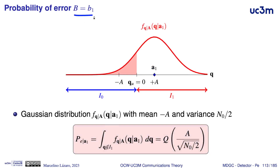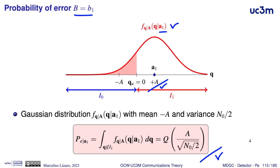If we transmit the second symbol B1, or its vector representation A1, the conditional distribution of the observation is a Gaussian distribution with mean equal to A1, equal to plus A. Similarly, it is necessary to integrate this distribution outside the decision region of A1 — for negative values in this case — and again the integral can be obtained by means of the Q function. The distance to the threshold is the same as in the previous case, A, and at the denominator, square root of N0 over 2.